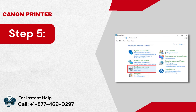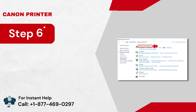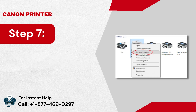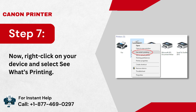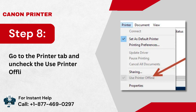Step 5: Next, you have to click 'Hardware and Sound' to continue. Step 6: After that, choose the 'Devices and Printers' option. Step 7: Now, right-click on your device and select 'See What's Printing'. Step 8: Go to the Printer tab and uncheck the 'Use Printer Offline' option.